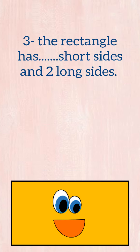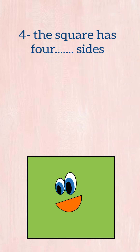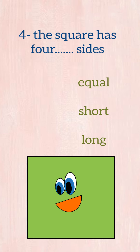Number three: the rectangle has two, three, or four short sides and two long sides? The rectangle has two short sides and two long sides. Number four: the square has four equal or four short sides? The square has four equal sides.